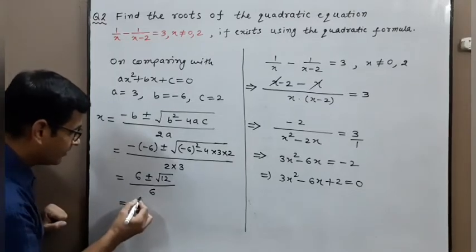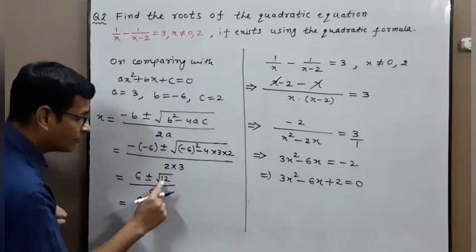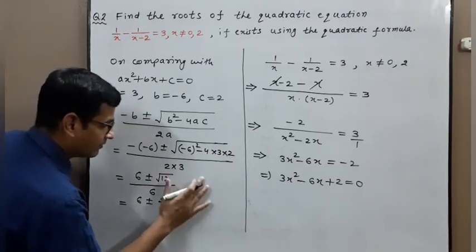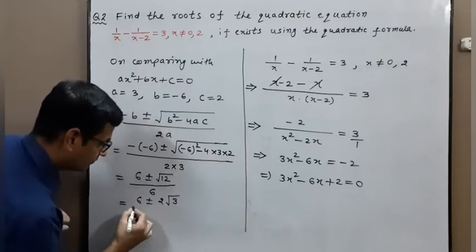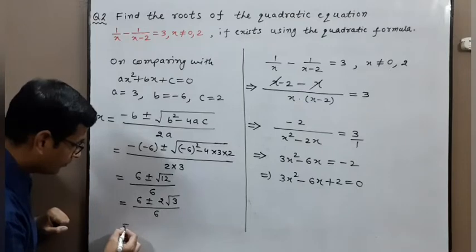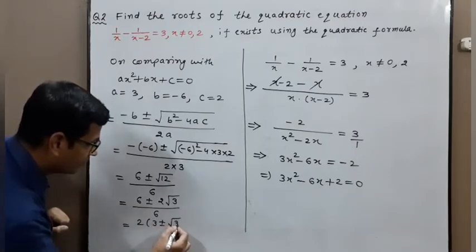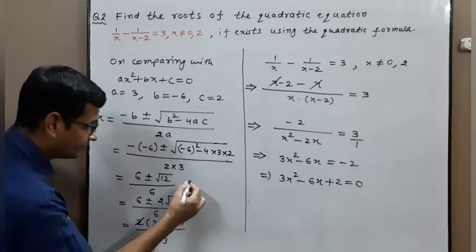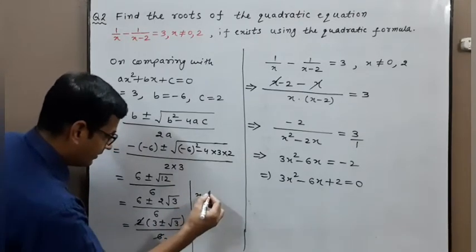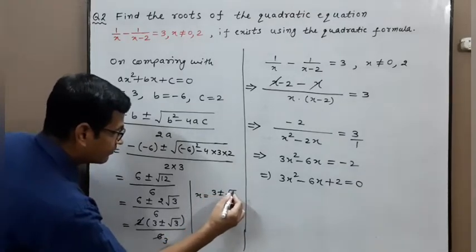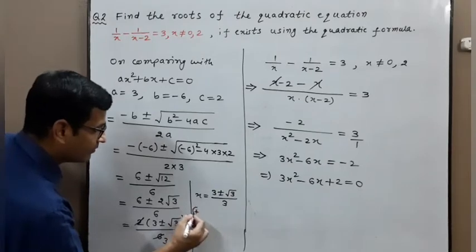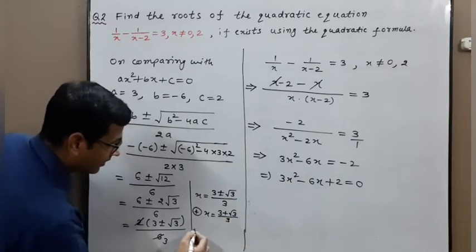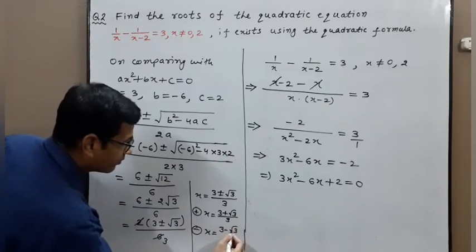Factoring 12 as 4 into 3, root of 12 equals 2 root 3. So we get 6 plus or minus 2 root 3, upon 6. Taking 2 as common factor gives 3 plus or minus root 3, upon 3. Taking the plus sign: x equals 3 plus root 3 upon 3. Taking the minus sign: x equals 3 minus root 3 upon 3.